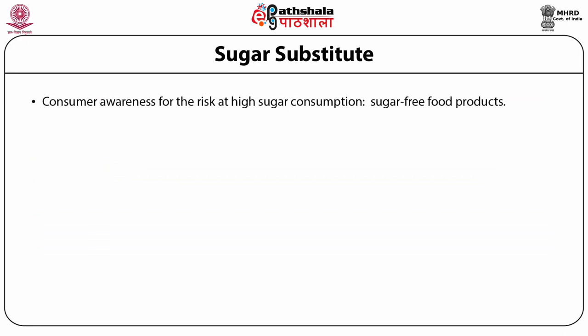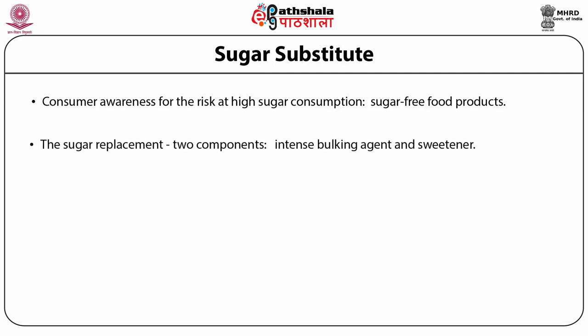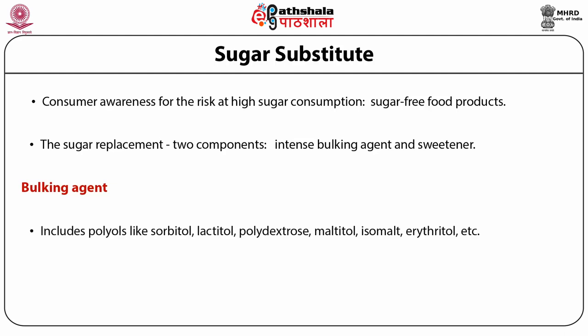Consumer awareness of the risks of high sugar consumption led to the development of sugar-free food products, and sugar confectionery is not an exception, as sugar is the principal ingredient in all confectionery products. Sugar has to be replaced with two components: a bulking agent and intense sweeteners. Bulking agents include polyols like sorbitol, lactitol, polydextrose, maltitol, isomalt, erythritol, etc., which give bulk to replace the intense sweetener at the cost of sucrose.